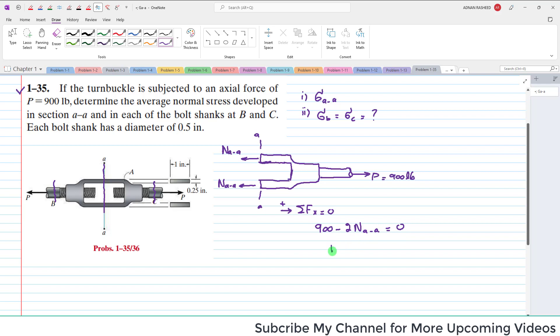It means that 2 times N_AA is equal to 900 pounds, and N_AA will be equal to 900 divided by 2, which is equal to 450 pounds.